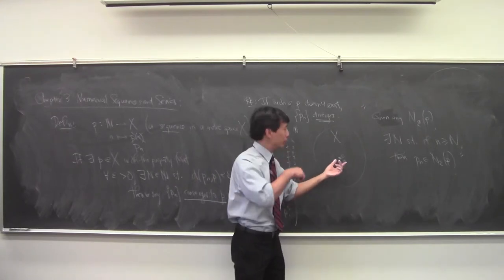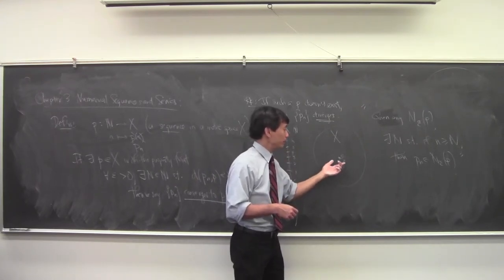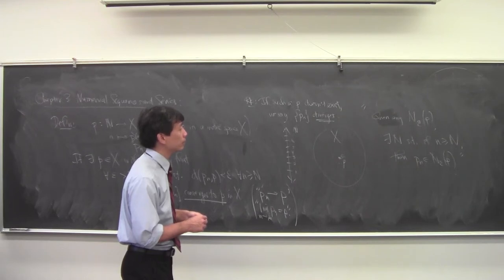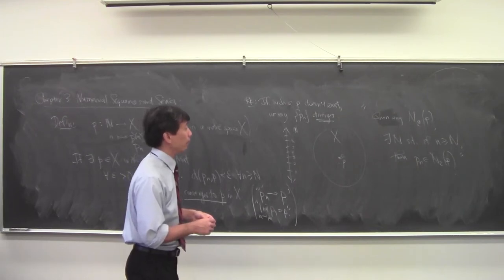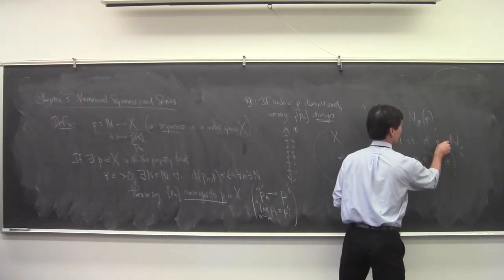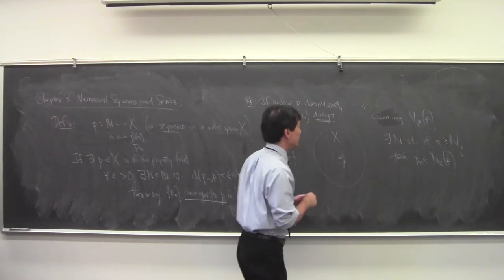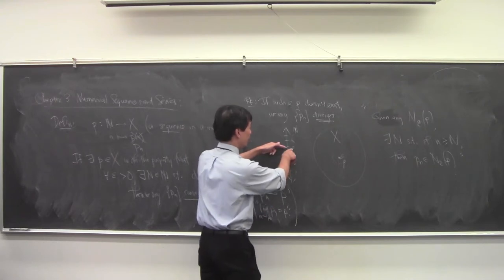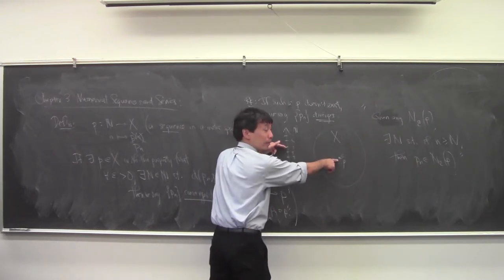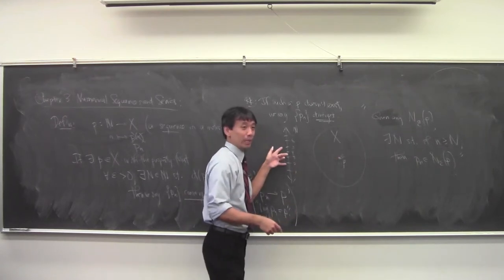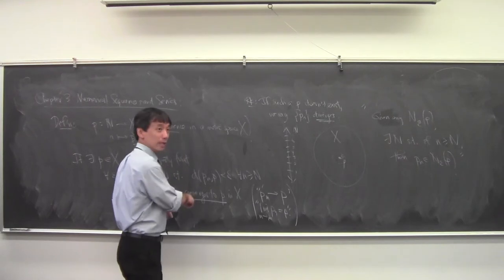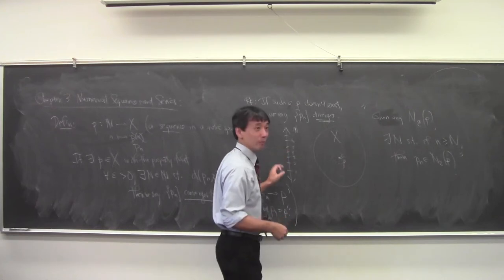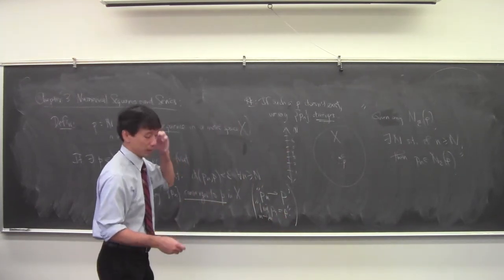In answer to whether the inequality could go the other way: that would say there exists an N such that before that time, everybody lies inside the neighborhood. That tells you about behavior at the beginning of the sequence. But we're interested in what happens as n goes to infinity, not the very beginning.